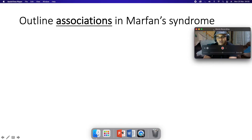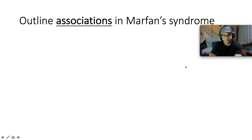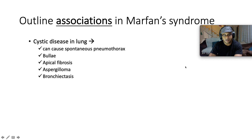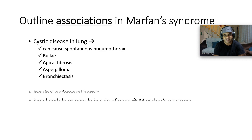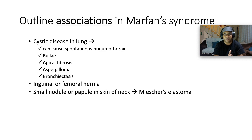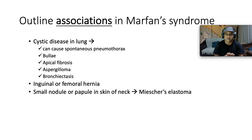Other associations in Marfan syndrome: it is associated with cystic disease in the lung, which is known to cause spontaneous pneumothorax. It can cause bullae, apical fibrosis, aspergilloma, and bronchiectasis. It can also have an association with inguinal or femoral hernia, and also with a small nodule or papule in the skin of the neck — which we call Miescher's elastoma.